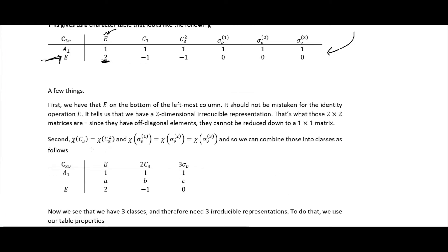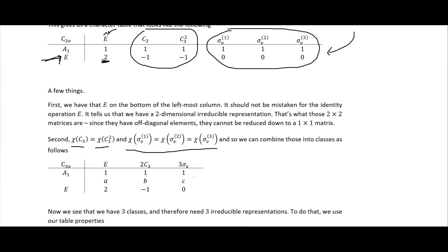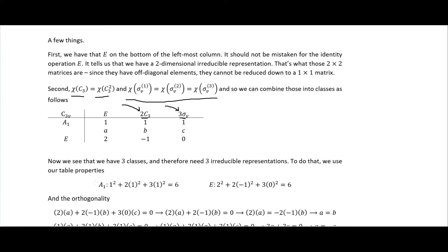The second thing to notice is that the character of C3 equals the character of C3², and the characters of all three reflections are the same. So we can group those into classes. This is the next key difference from C2V: we now have coefficients in front of the classes — this class has two operations in it, and this class has three. So we have three classes and therefore three irreducible representations.